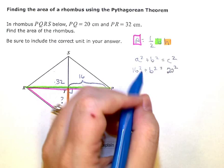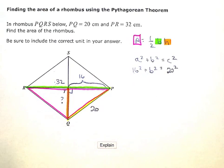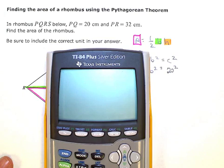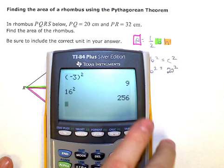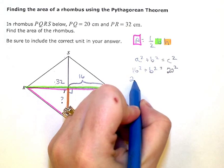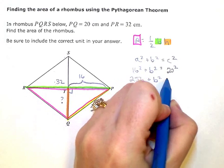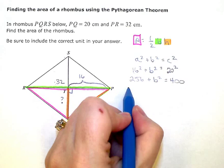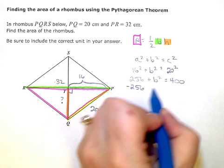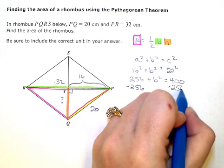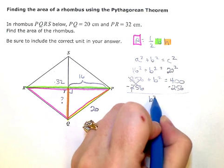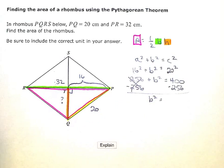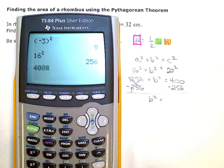Well, 16 squared, go ahead and type that in. 16 squared gives me 256, plus b squared equals 20 squared is 400. I'm going to subtract 256 from each side.